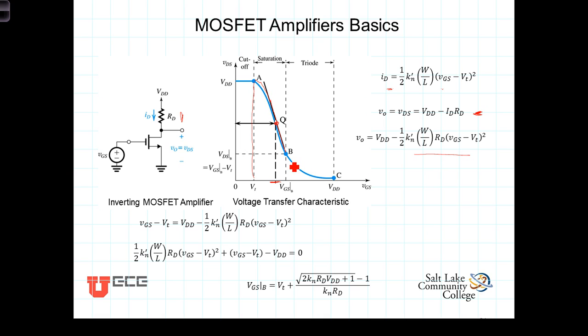The points marked A and B correspond to the edges of the saturation region. As I've already mentioned, for values of VGS less than the threshold voltage, the transistor is in cutoff, and for values greater than this point here, the transistor is in the triode region, and our amplification takes place within the saturation region.